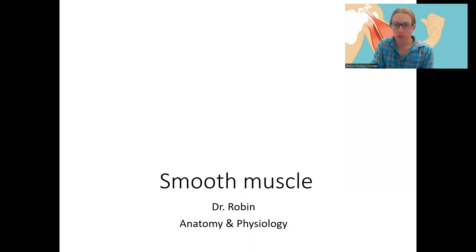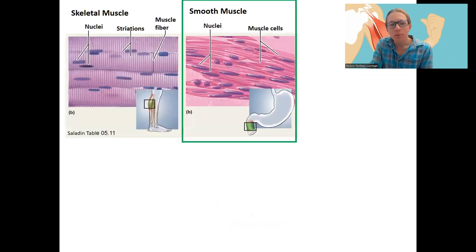Now, lastly, smooth muscle. So we've also already talked about this type of muscle. Compared to skeletal muscle, it is much smoother. The cells, instead of being really long or branched like cardiac muscle or striated like the other two, they're smooth and then they're spindle shaped.